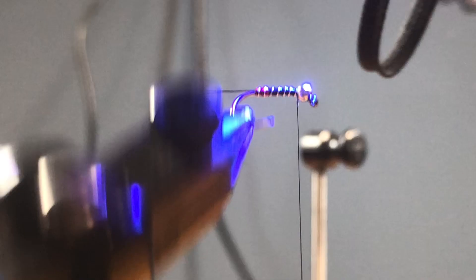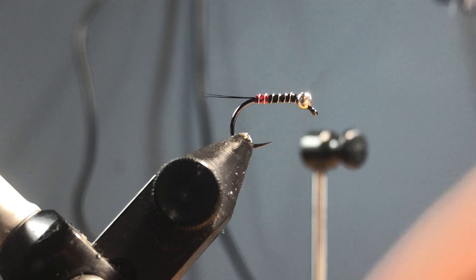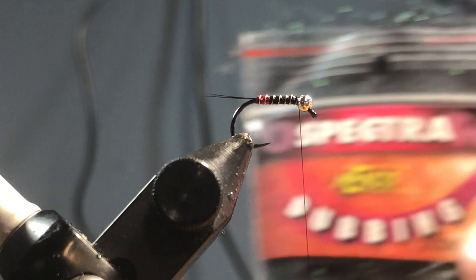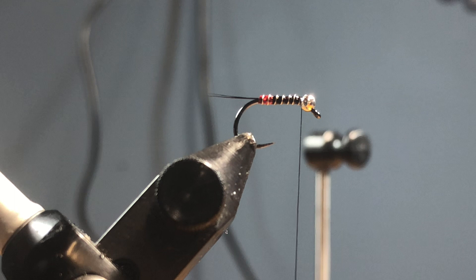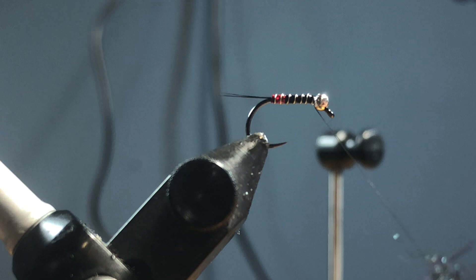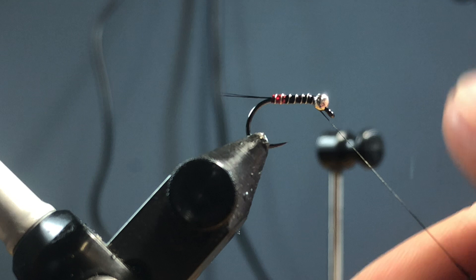All right, we're almost done here. We're gonna grab some Hends Spectra Dubbing shade 46. I like the Spectra dubbing because it just dubs way tighter than Ice Dub. It's shredded a lot finer. So I'm gonna come in and just do a real tight dubbing noodle. No loops today, but if you watch this channel enough, big fan.